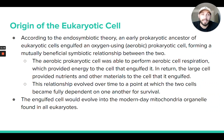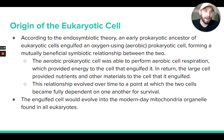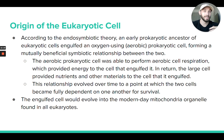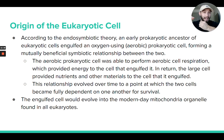We end with the endosymbiotic theory — a very important concept you need to know starting in this unit. This theory explains how it might have been possible for eukaryotic cells to evolve from prokaryotic cells. It's well confirmed in the fossil record that the first life on this planet was prokaryotic, and this theory focuses on the presence of mitochondria and chloroplasts in eukaryotic cells.